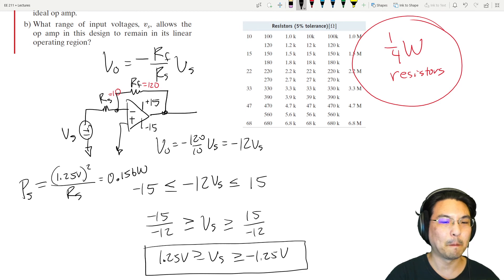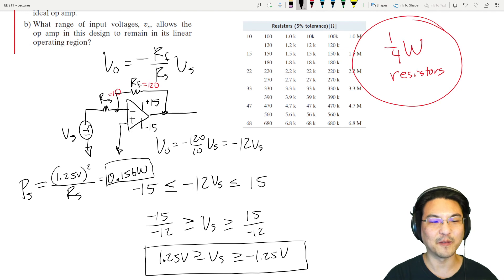How about the other resistor? The voltage on this side is 0, the voltage on this side is as much as 15. So the power for the feedback resistor, V squared over R, at most 15 over R.